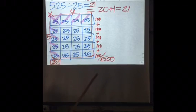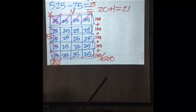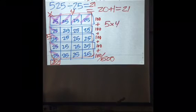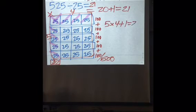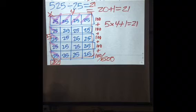So if we wrote this out, we could write it out as 5 times 4 plus 1, and that would equal 21.